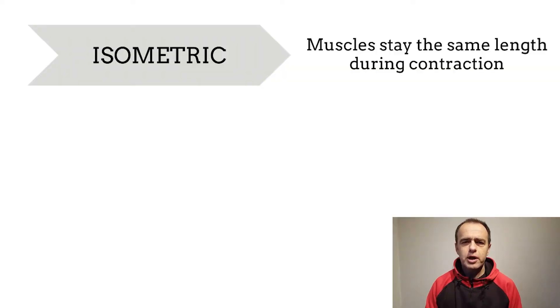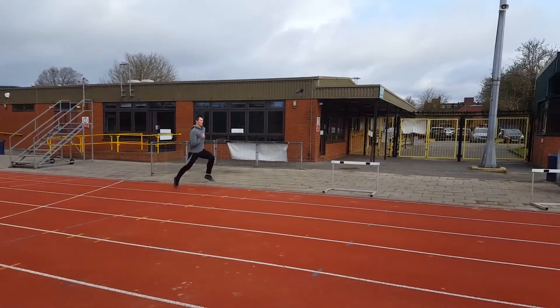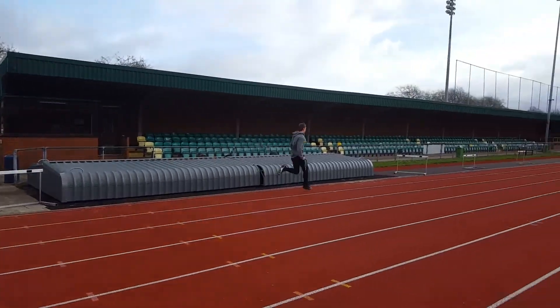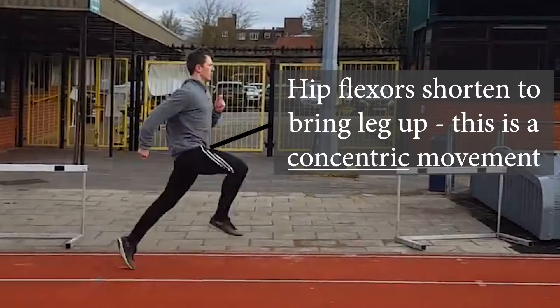The next type of muscle contraction is isotonic. This is where the muscle is either getting longer or shorter as we use it. The first of these would be concentric movements, where the muscle is getting shorter. The insertion and the origin — the two ends of the muscle — are getting closer together and the muscle is getting fatter. When we're running, a good example of this would be the hip flexor: as we drive our knee through from the back position to the front, our hip flexors get shorter and contract fast in order to move our knee forwards.